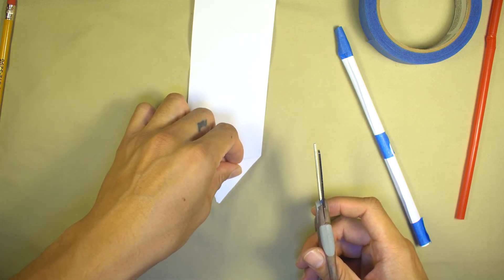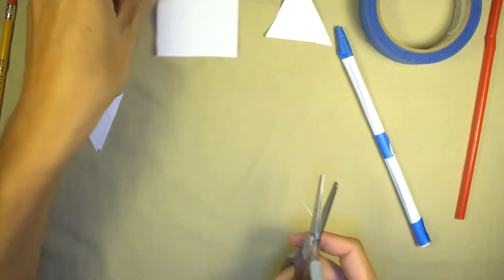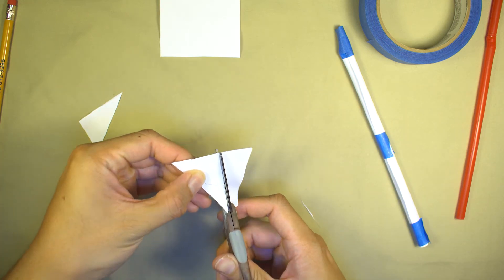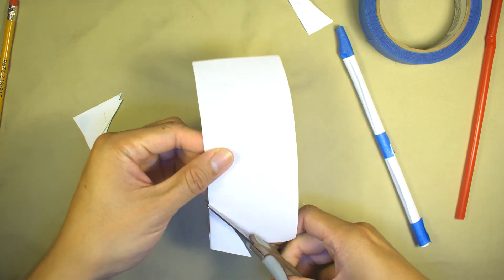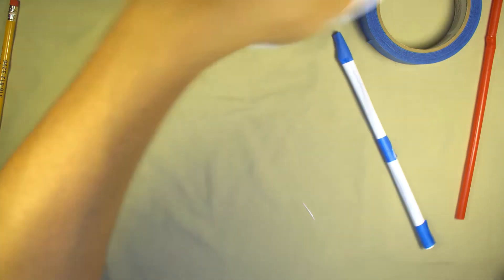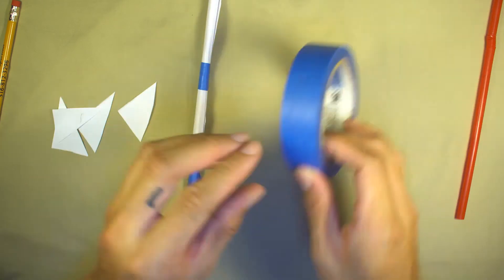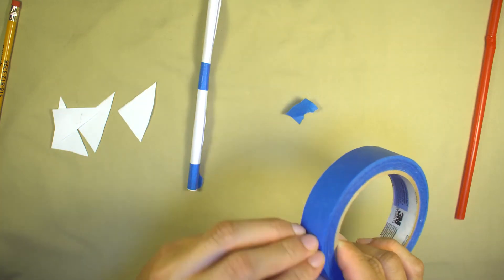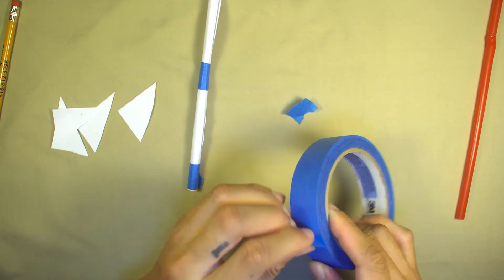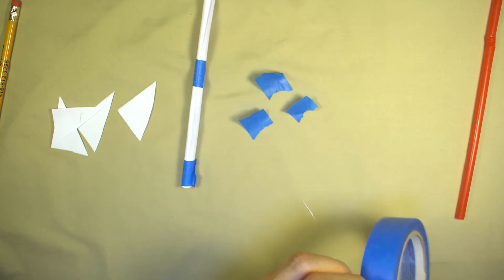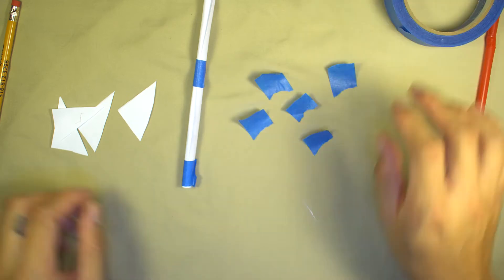Now, tape the fins to the open end of the rocket, then bend them outward with equal space between them.